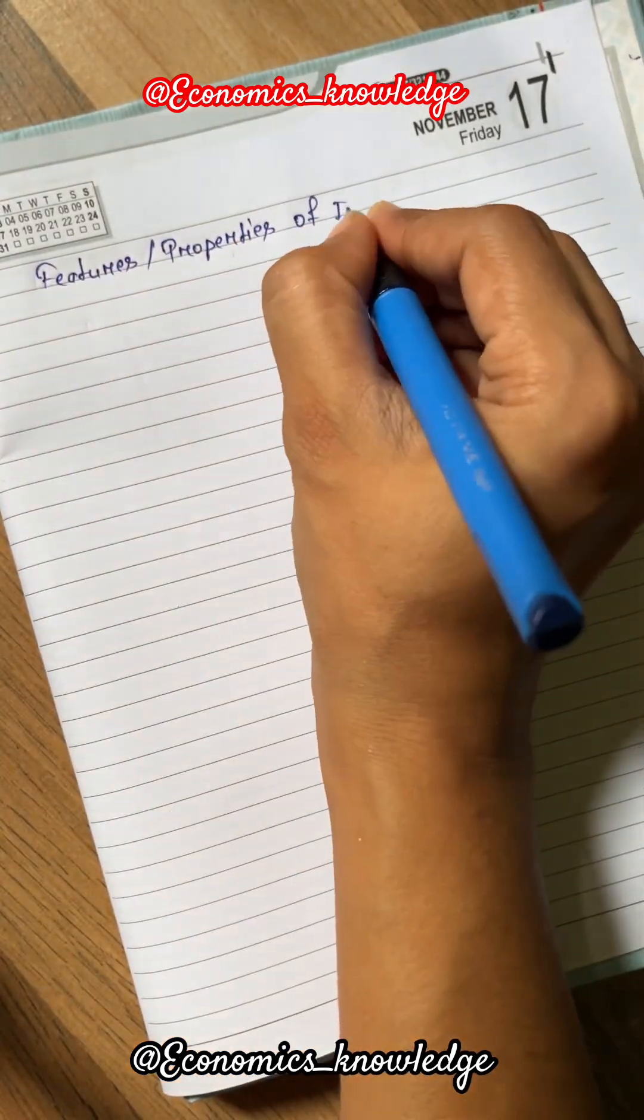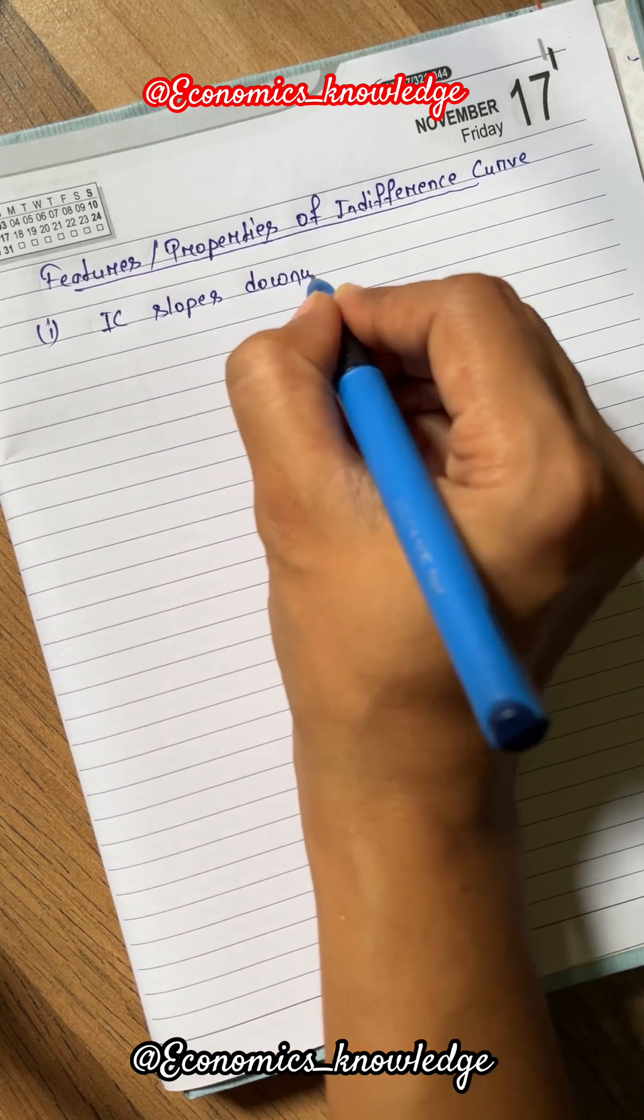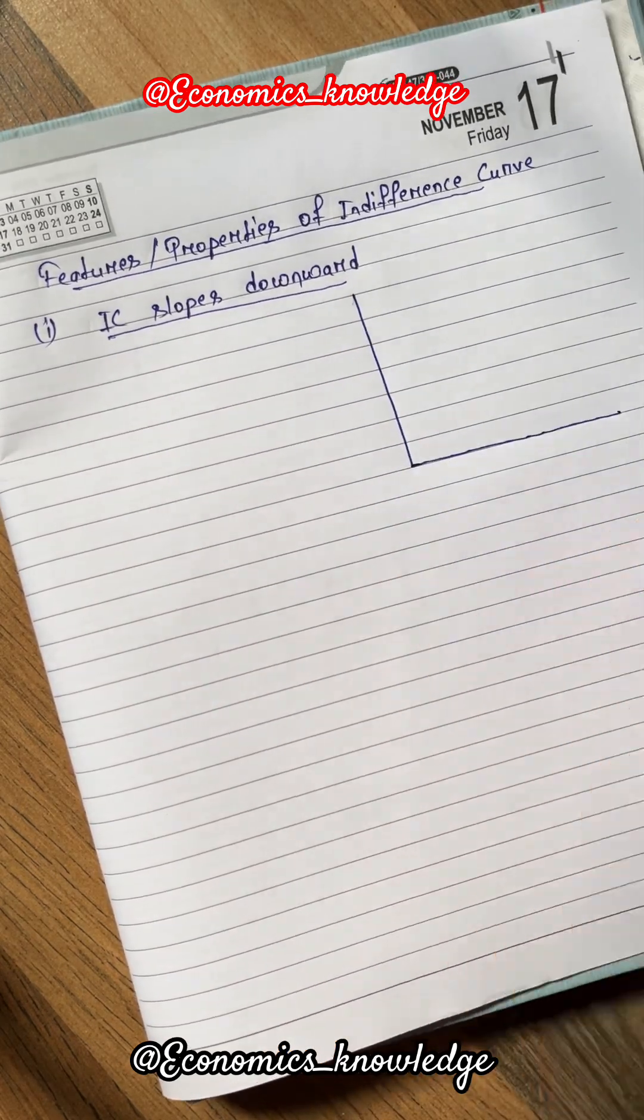Features or properties of indifference curve. The first feature is that indifference curves slope downward from left to right and have a negative slope.